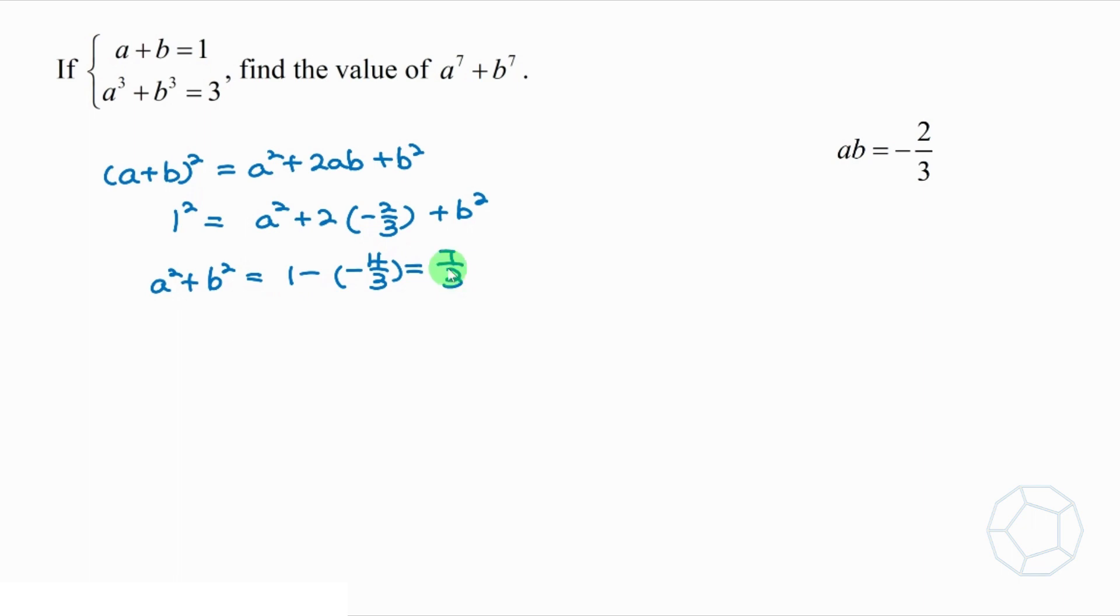Now, we'll obtain the sum of power 4. Squaring both sides, we get a to the power 4 plus 2a square b square plus b to the power 4 is equal to 49 over 9.